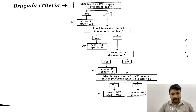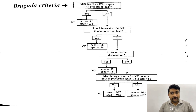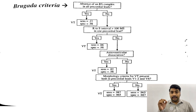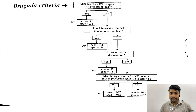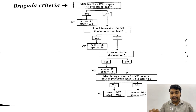If the R to S interval criterion is not met, we go to the next step: atrioventricular dissociation. AV dissociation is a type of rhythm in which the AV node and the ventricles are conducting their impulses independently. P waves come at their own pace and ventricular rhythms at their own pace with no association between the two. If there is AV dissociation, we call it VT.